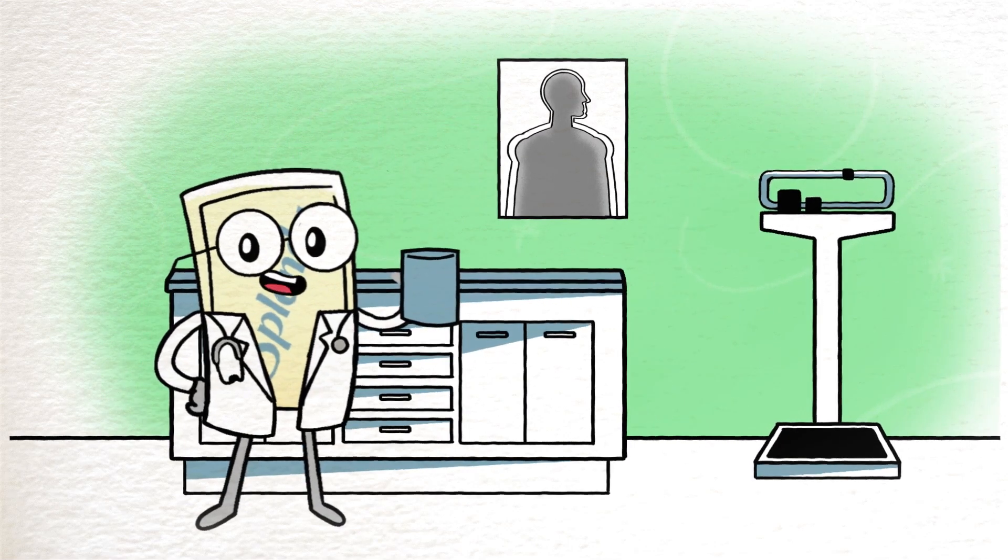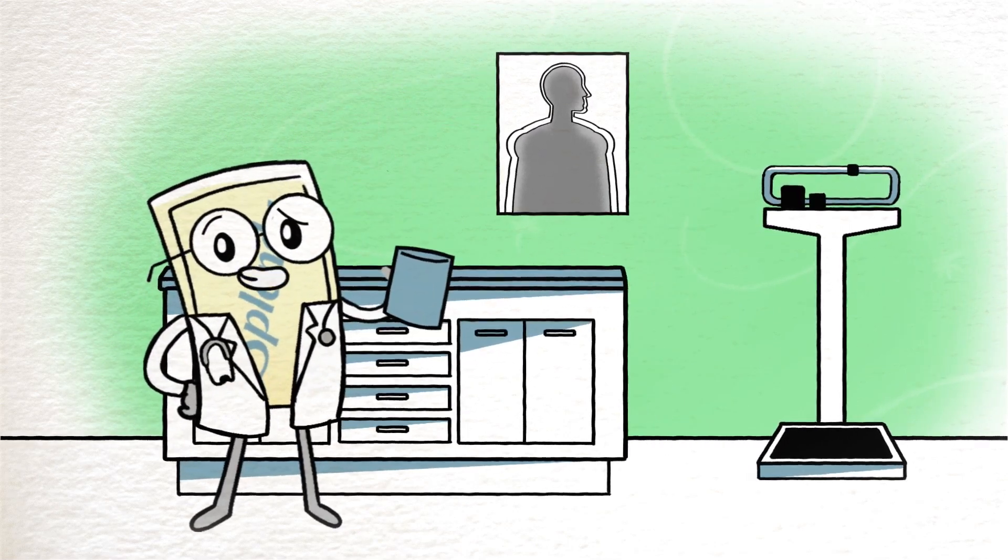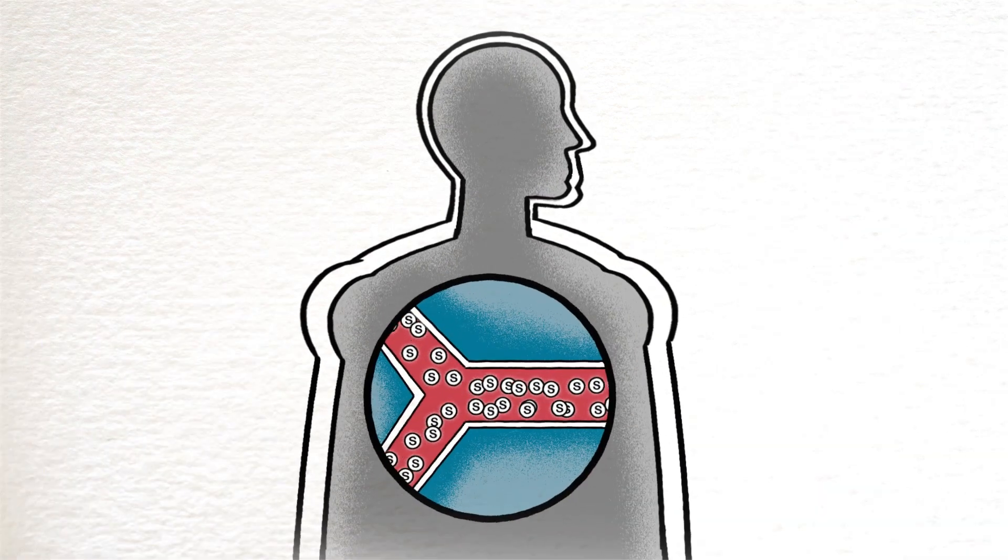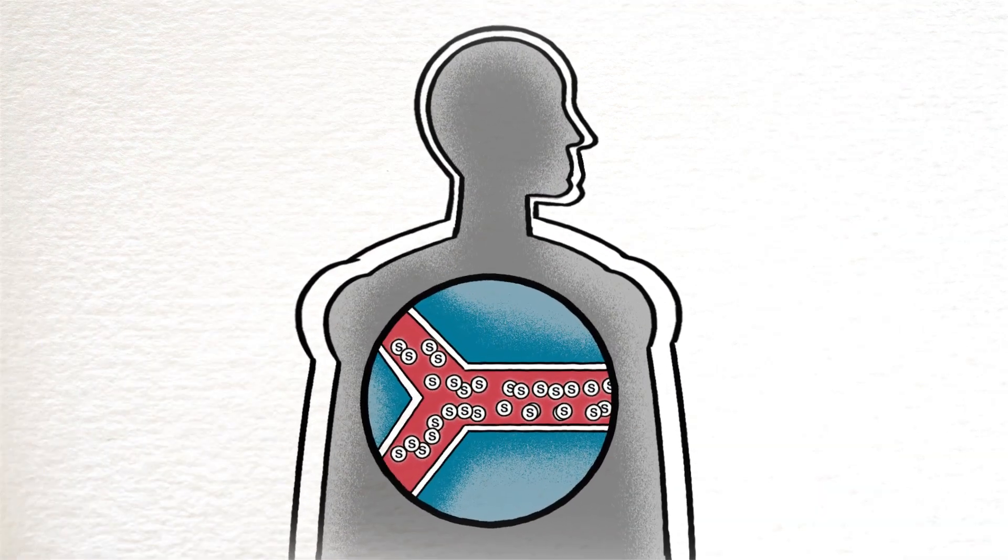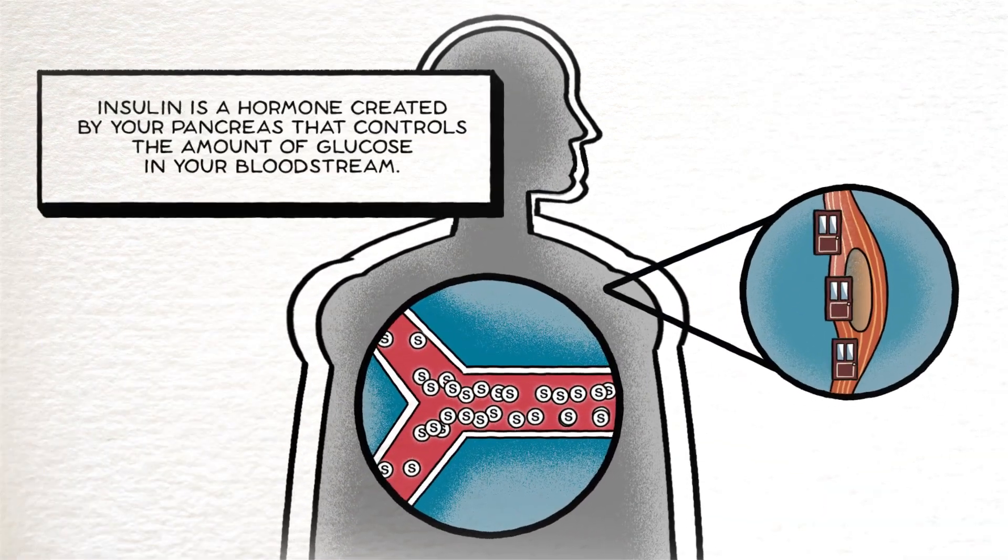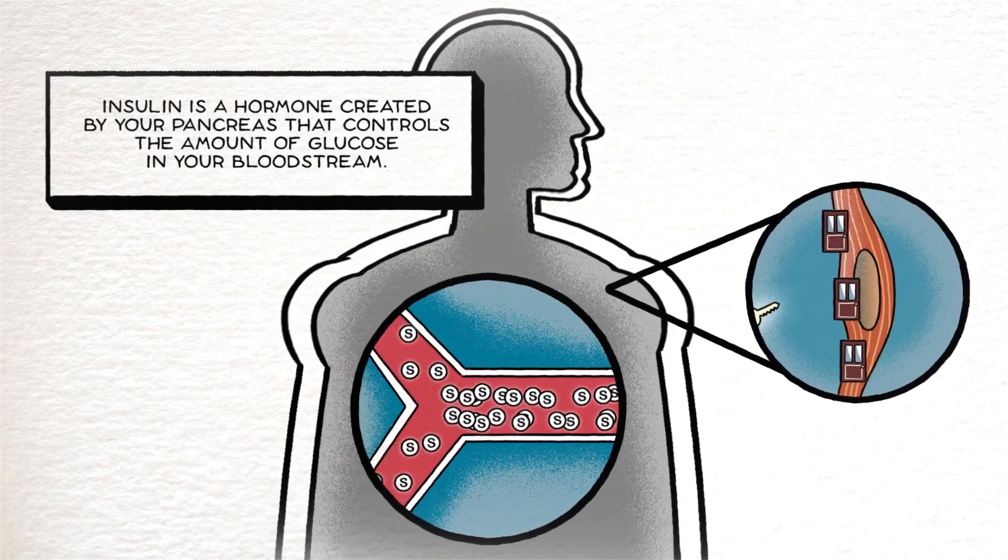If you've been told that your blood sugar is high, you may wonder what this means. High blood sugar means there's too much sugar in your blood because your body does not make enough insulin or the insulin isn't working properly.